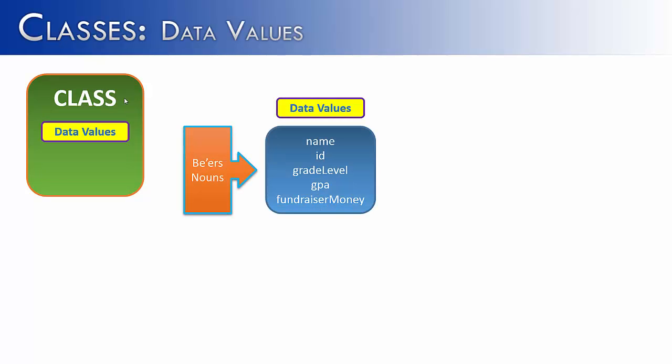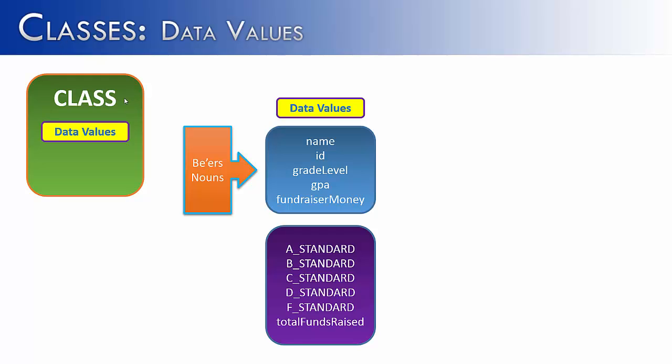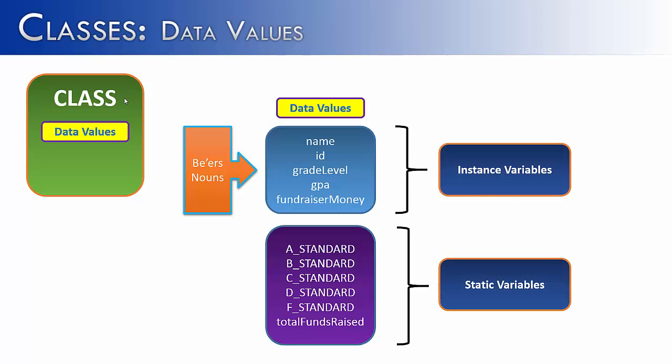I've shown you these data values in the previous slide but I'm going to add a few more possible data values of the student class. And those are A_STANDARD, B_STANDARD, C_STANDARD, D_STANDARD, F_STANDARD and total funds raised. Now before I show you the difference between the two I want to give them names. And so the names of the top set are instance variables and the names of the bottom set are static variables. They all are beers of the class and so we have instance variables and static variables. Well what's the difference between the two?